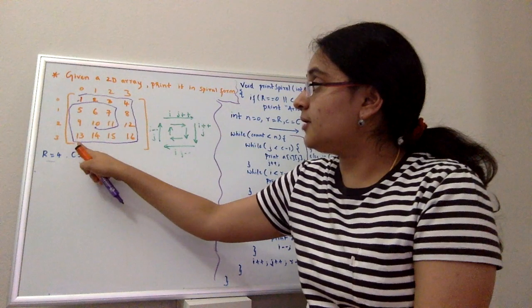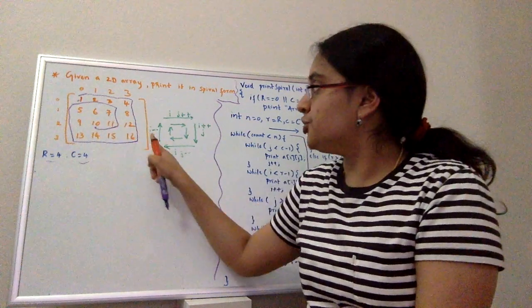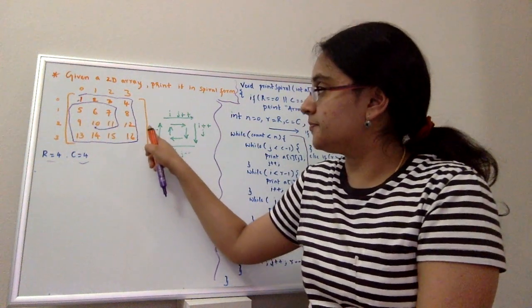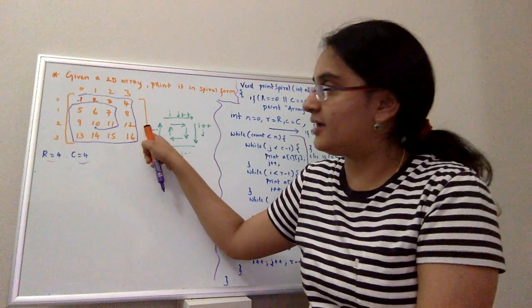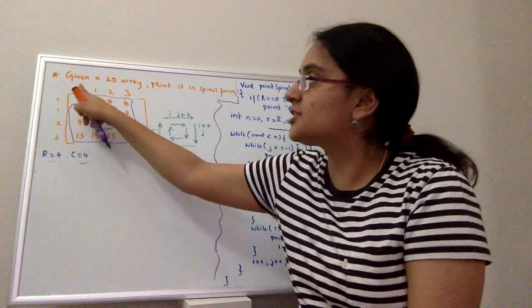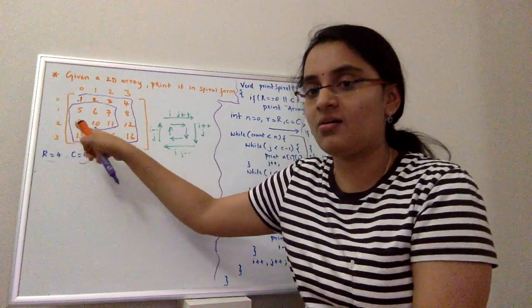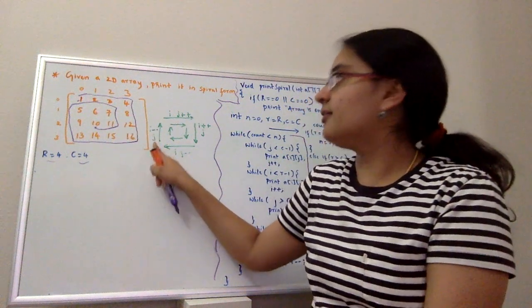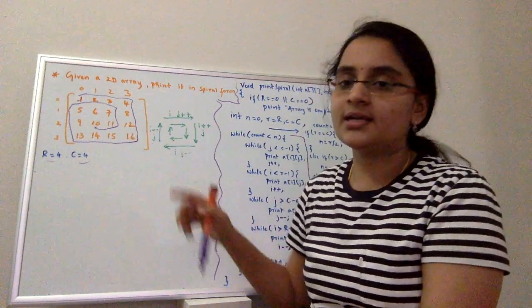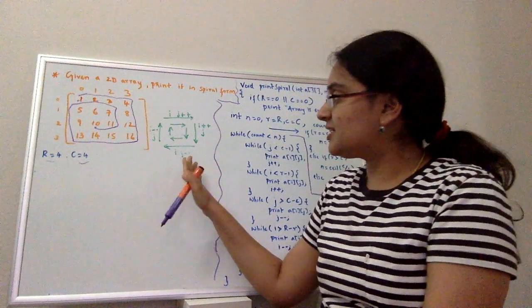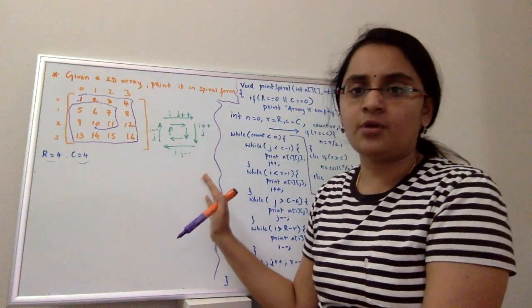For printing the column from bottom to top, you have to decrement the row index again because it's the first column and all the different rows. Row index is decrementing and column index is constant. So basically this is the whole logic for this problem.